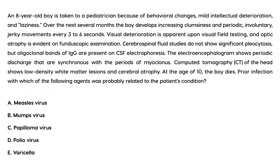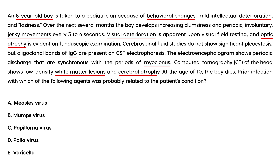Vignette two: An eight-year-old boy is seen for behavioral changes, mild intellectual deterioration, and laziness. Over the next several months he develops increasing clumsiness and periodic involuntary jerky movements every three to six seconds. Visual deterioration is apparent, and optic atrophy is evident on fundoscopic exam. CSF studies do not show significant pleocytosis, but oligoclonal bands of IgG are present on CSF electrophoresis, and the EEG shows periodic discharges synchronous with the periods of myoclonus.